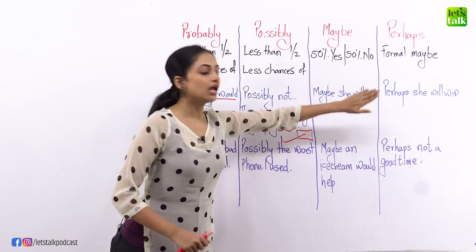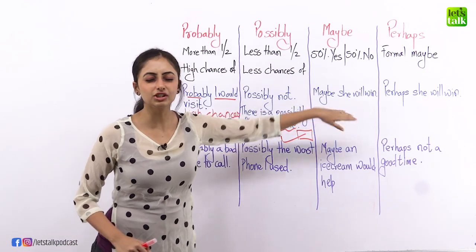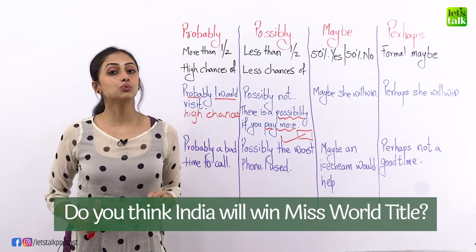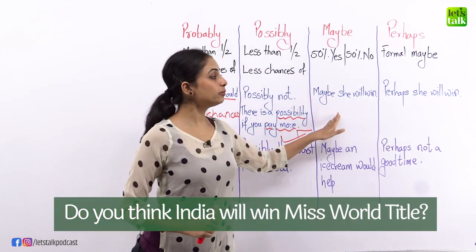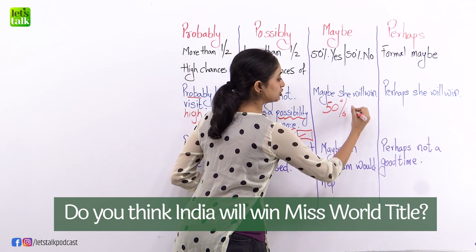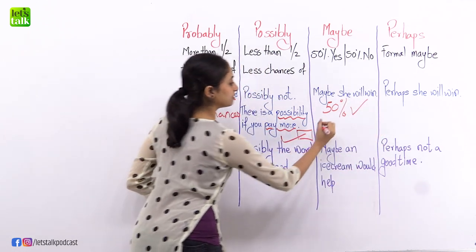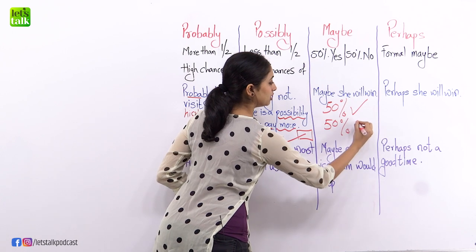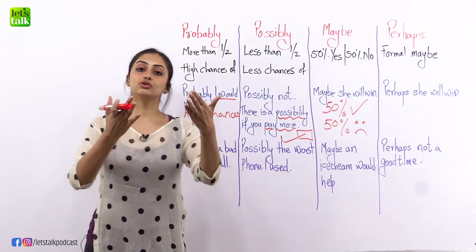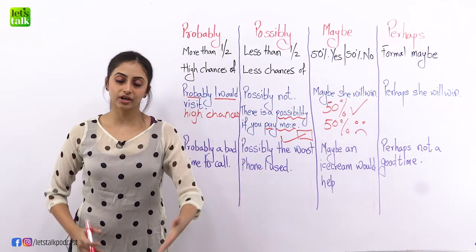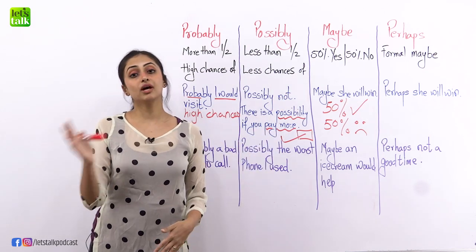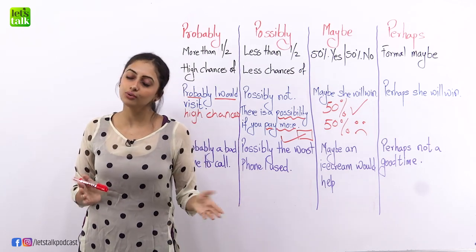Now maybe, let me ask you a question. Do you think she will win this competition? Do you think India will win Miss World this time? And you say, maybe she will win. That means there is a 50% chance that she may win or there is a 50% chance that she may not win, right? Well that is maybe, a chance that you're just not taking a risk to answer. Would you like to come for a party? Maybe, maybe I will, maybe I won't. Don't take my word for it, I will tell you later. That's what you mean.